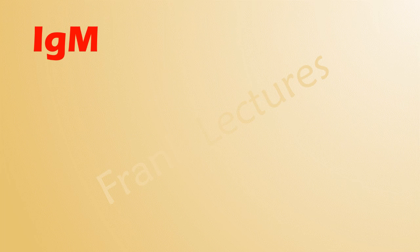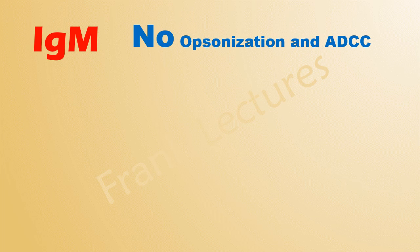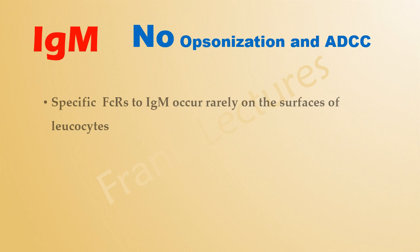IgM antibodies do not act as opsonins, nor do they play a role in antibody-dependent cell-mediated cytotoxicity. This is because specific Fc receptors for IgM occur rarely on the surfaces of leukocytes.